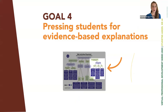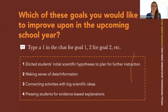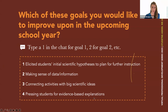Goal three gets students thinking toward the bigger implications of what they are learning in science, not just the one phenomena, and can be achieved by engaging in the middle two columns of the flowchart. Goal four is pressing students for evidence-based explanations — we want students to construct comprehensive explanations of their learning. You can help students achieve this by using the activities in the far right-hand column of the talk activities flowchart.